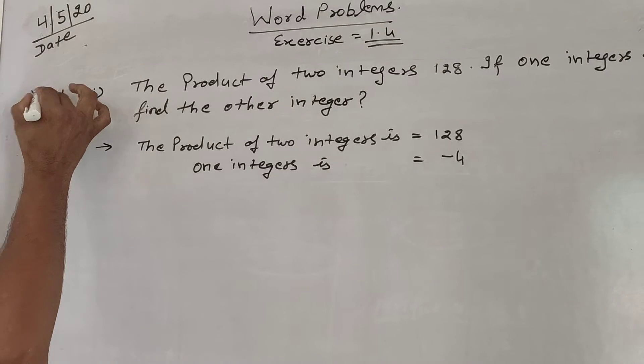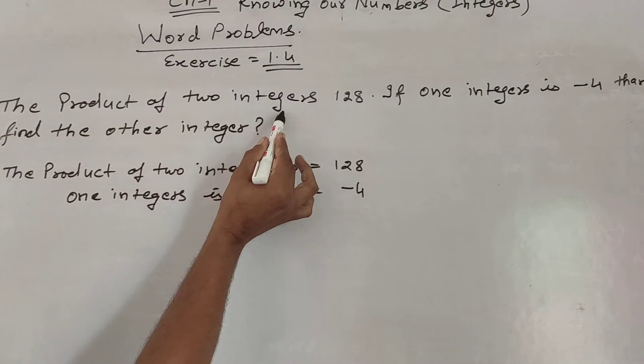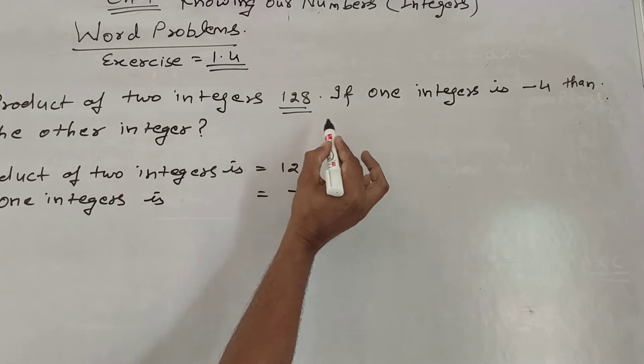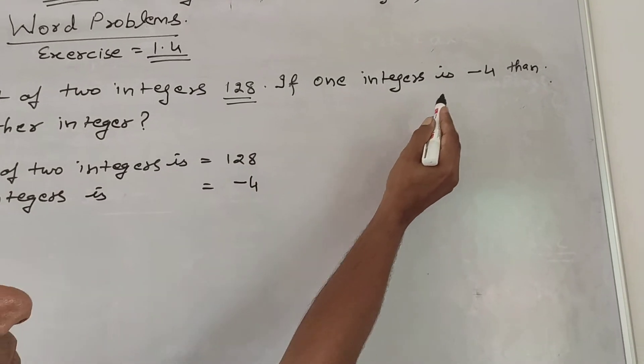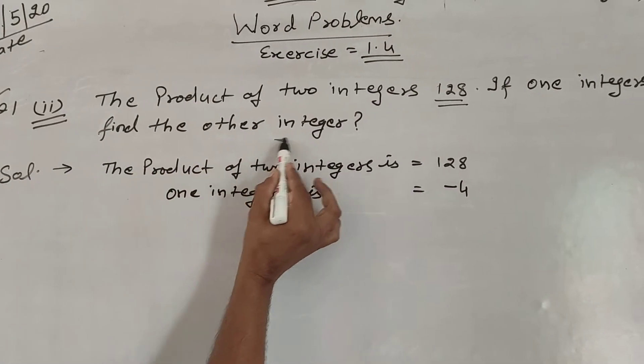Here I write question number 1, part 2: The product of two integers is 128. If one integer is minus 4, find the other integer.